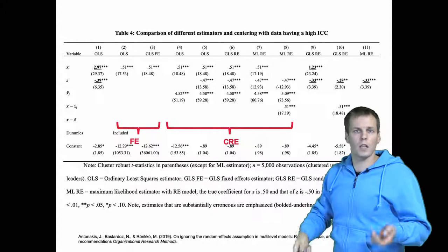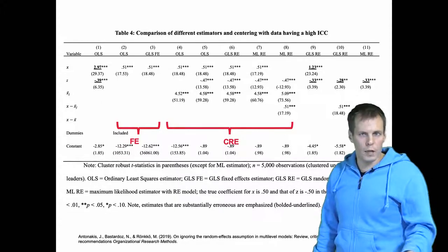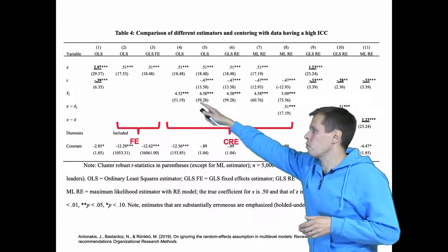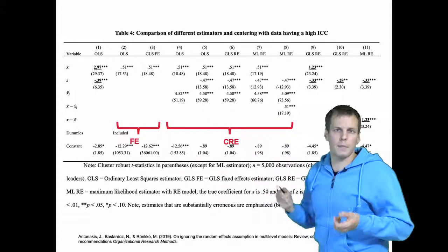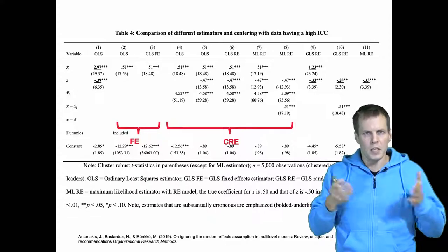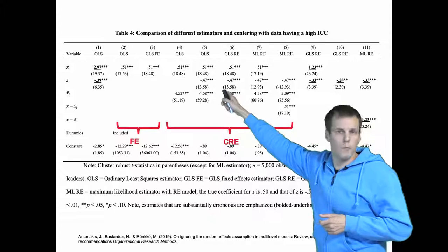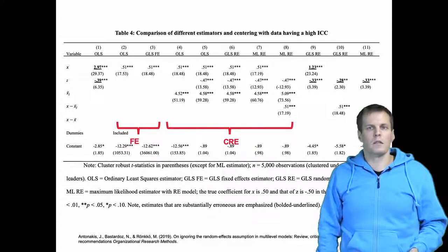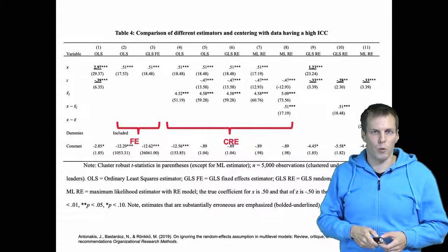The CRE correlated random effects model produces the same within effect as the fixed effects approach but also allows you to model level two predictors like Z and provides information about the contextual effect or the between effect. The standard errors should be consistent — they use cluster robust standard errors which differ due to residual calculation, but in large samples they should generally converge. CRE produces more results and can be applied in scenarios where fixed effects cannot, so it seems a preferable alternative.